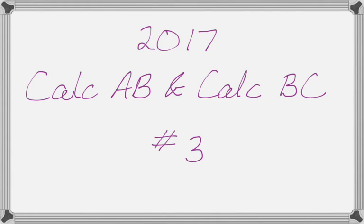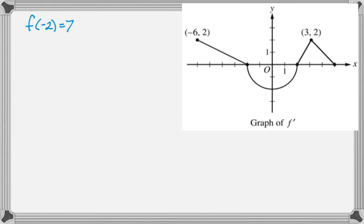Okay, in this video we're going to talk about number 3 from the Calc A, B, and BC exams in 2017. It's one of those problems where you're given a graph of the first derivative and you're asked a bunch of questions. So here is the graph, and you're told that the function is differentiable on the closed interval from negative 6 to 5, and f of negative 2 is 7. So that's all given.